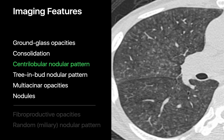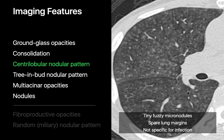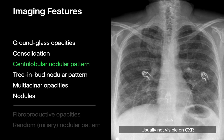We look for centrilobular nodular patterns, which appear as innumerable, loosely grouped, tiny, indistinct micronodules that are relatively equidistant from each other and usually don't touch the lung margins or fissures. They're not specific for infection, since they're also commonly seen with non-infectious inflammatory conditions like smoking-related respiratory bronchiolitis and hypersensitivity pneumonitis. Centrilobular nodular patterns are typically invisible on chest radiography.